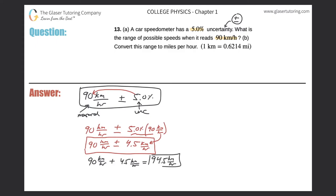Okay, wonderful. And then the lower limit would be 90 kilometers per hour minus 4.5 kilometers per hour. Right? And that should now work out to be 85.5 kilometers per hour.